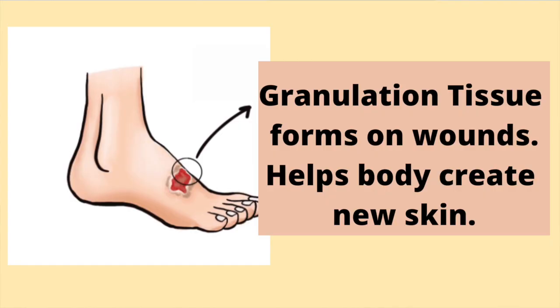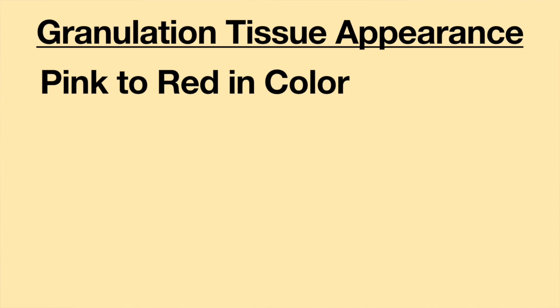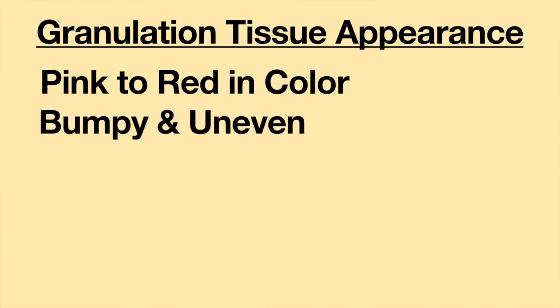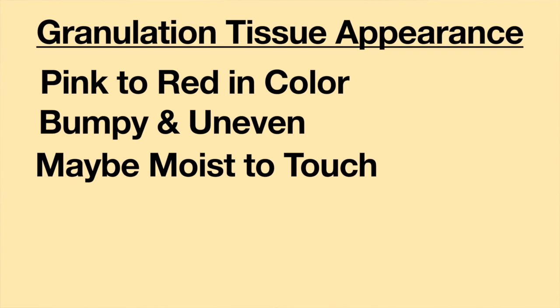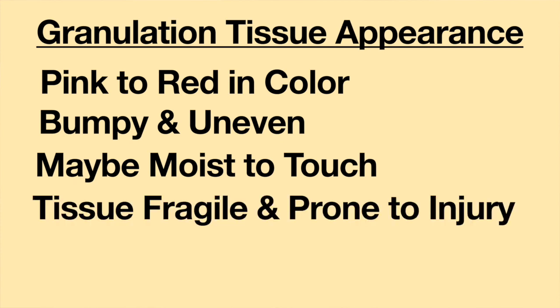Usually, the appearance of granulation tissue is a good sign. When a wound first starts producing granulation tissue, it means that the body is starting to rebuild after the injury. Granulation tissue is usually light pink to red in appearance. It is also commonly bumpy and uneven and may be moist to the touch. The tissue is very fragile and prone to injury.